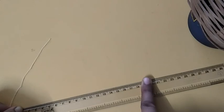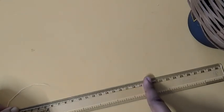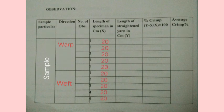As you can see, it is 21.3; this is our straightened yarn length. In this table we will mention our samples, the direction—warp and weft—and then we will write the initial length of the samples.